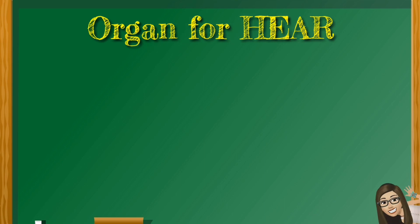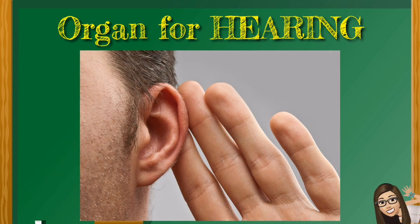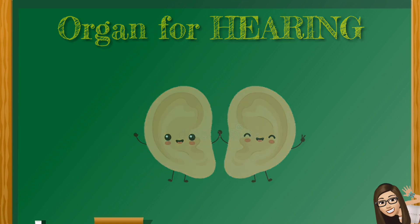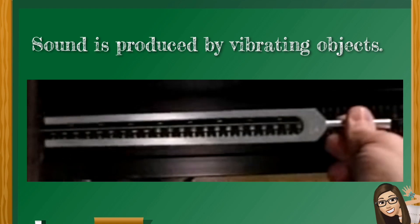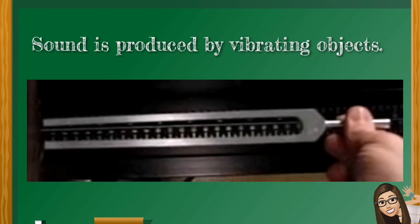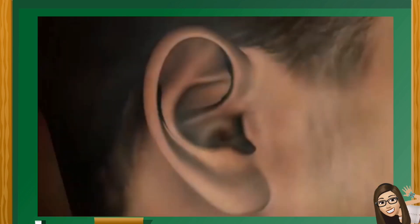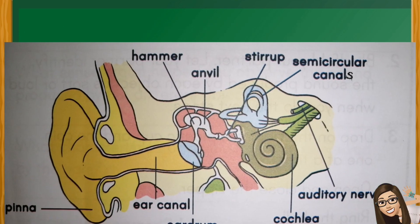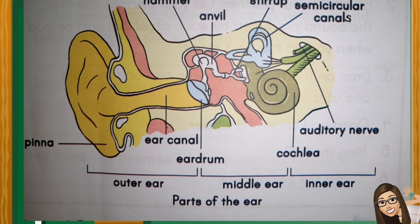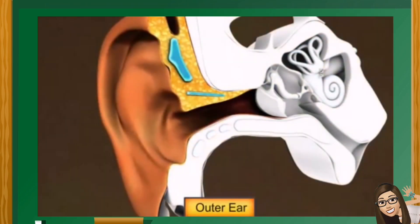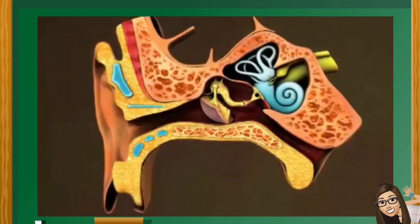But what helps you hear the sounds? The organ for hearing is the ear. You have a pair of ears that allow you to hear sounds. Sound is produced by vibrating objects. Vibration is a back and forth movement that creates sound waves. The ear has three main parts: outer ear, middle ear, and inner ear.